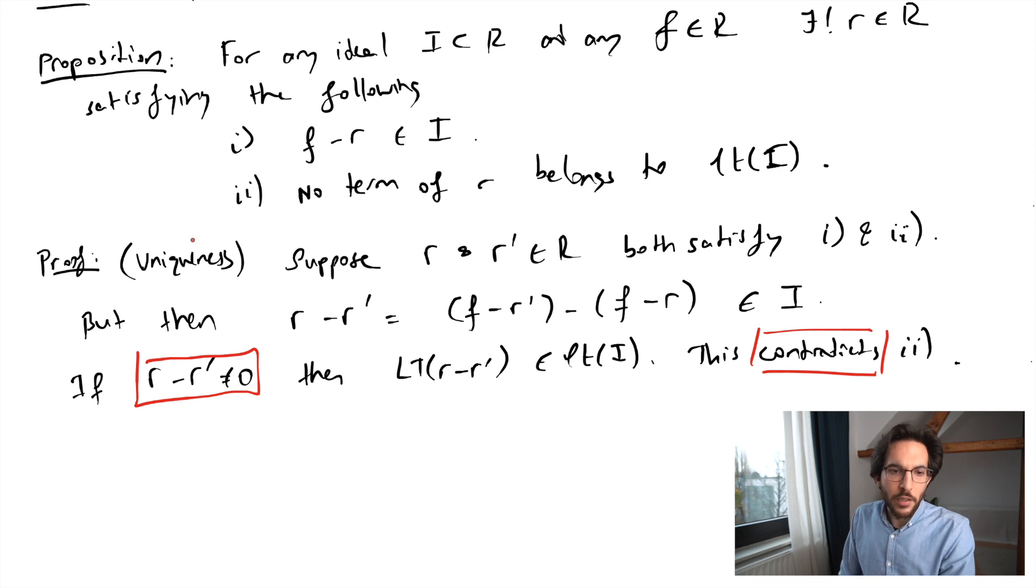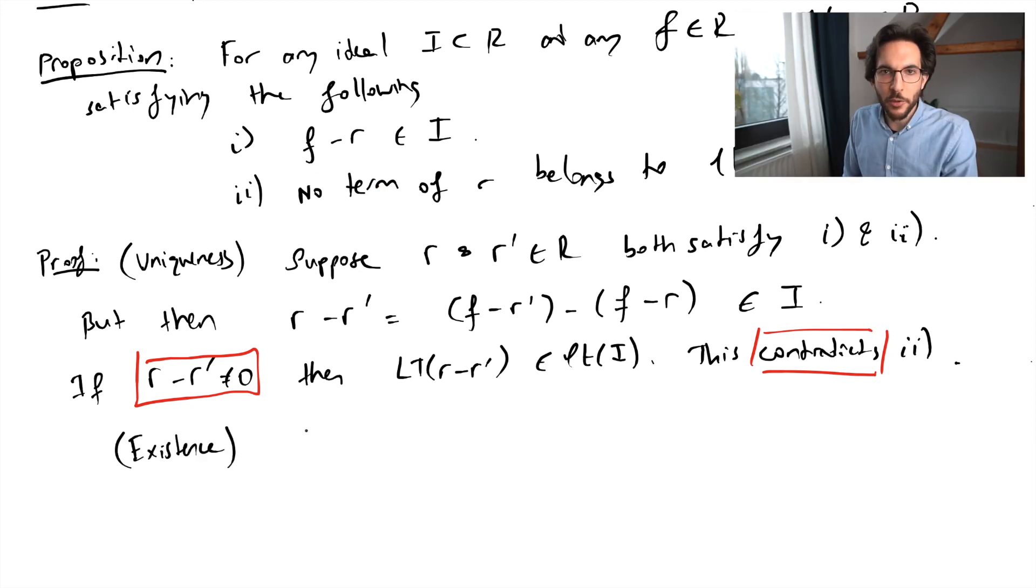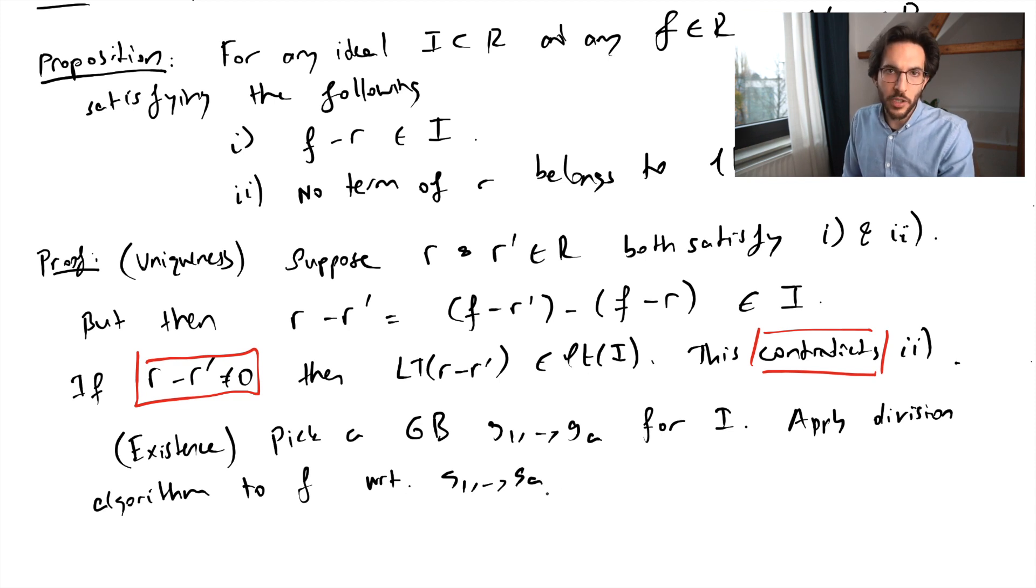Now let's show existence. And the proof of existence will also show the connection to the division algorithm. So what we're going to do, and this will be our first employment of the Gröbner basis, is to pick a Gröbner basis for i. And then we're going to use our division algorithm on F. So we divide F with respect to g1 through ga. This gives us the following expression. And one thing that the division algorithm did was that the remainder had no term that was divisible by the leading terms of the g_i's. But the g_i's are a Gröbner basis, so that their leading terms generate the ideal of leading terms. So R satisfies our condition 2.